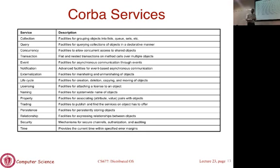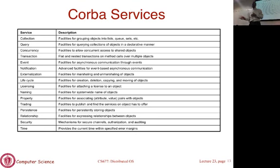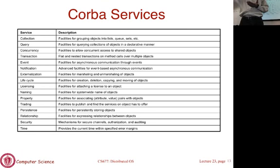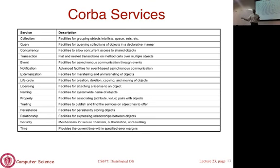If you're trying to write a very simple application, the learning curve to understand all these services, their APIs, and how to use them is substantial. If you have something relatively straightforward, why use something very complex unless you need all that power? Additionally, there is overhead — any middleware imposes overhead as a software layer between the OS and the application — and in CORBA's case that overhead was actually quite high, meaning applications ran very slowly.